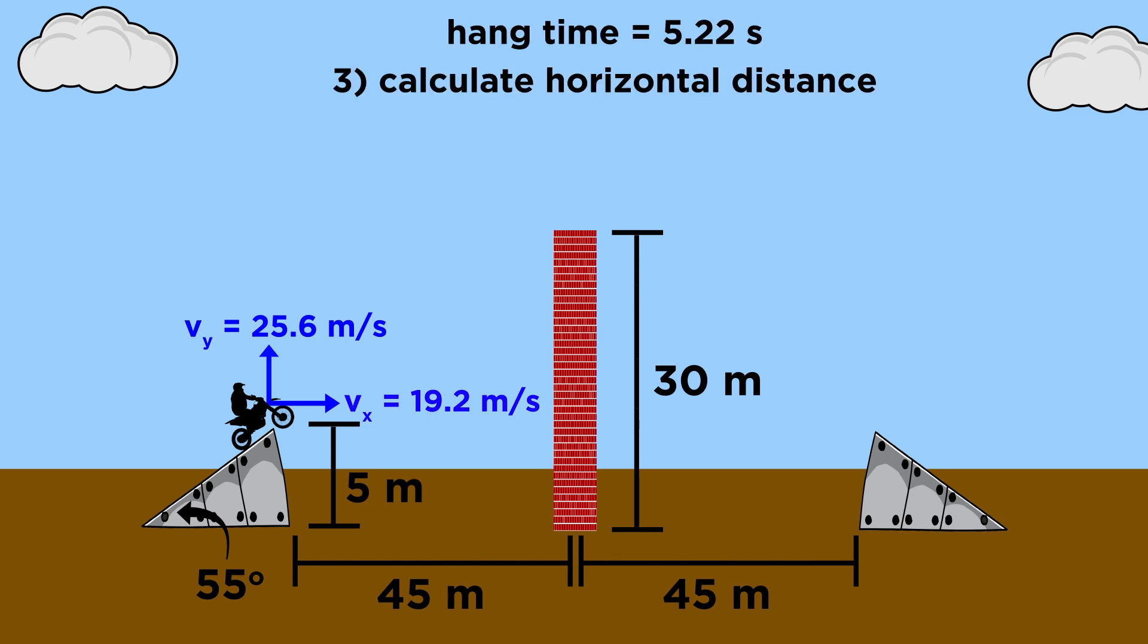Now that we know the time spent in the air, we can easily find out the distance traveled in the horizontal direction. This will just be the x component of the initial velocity, which doesn't change while he's in the air, times the hang time. That gives us ninety-three point four meters. So if we assume that there's no wind resistance, he should get the distance needed to hit the landing ramp.